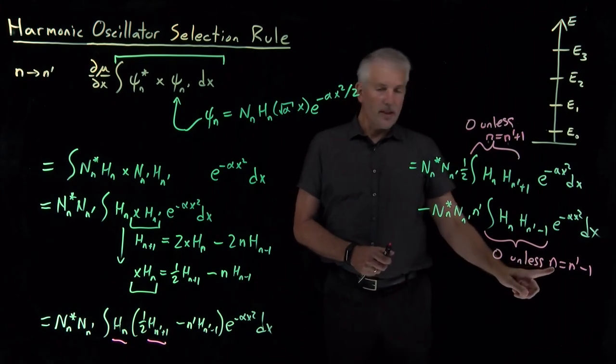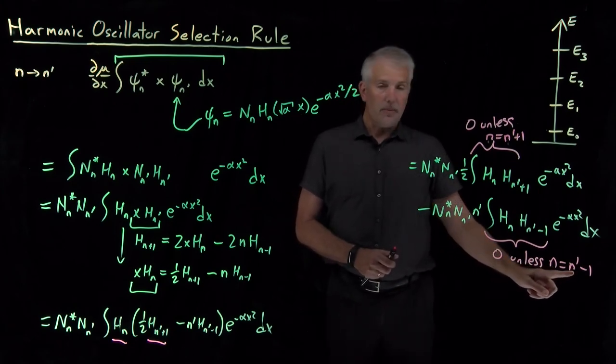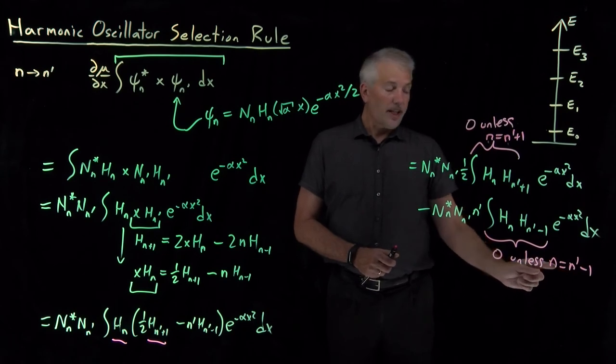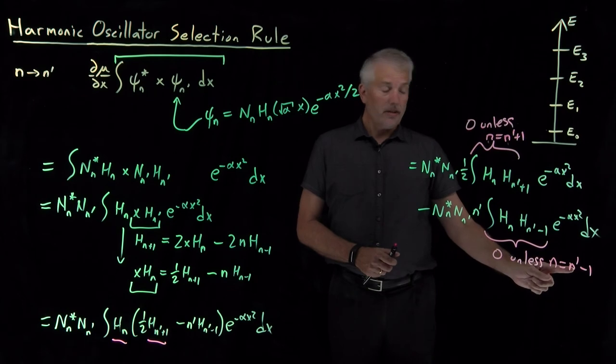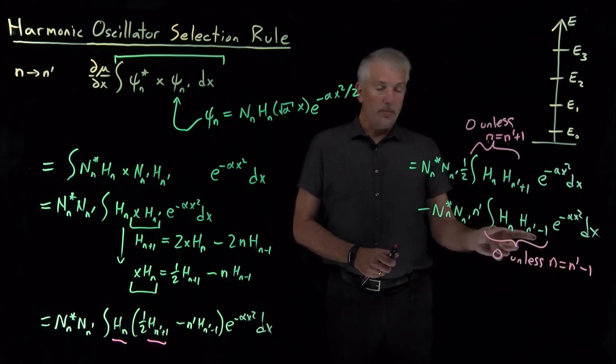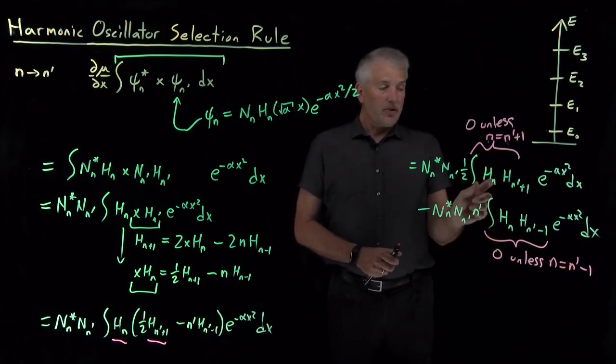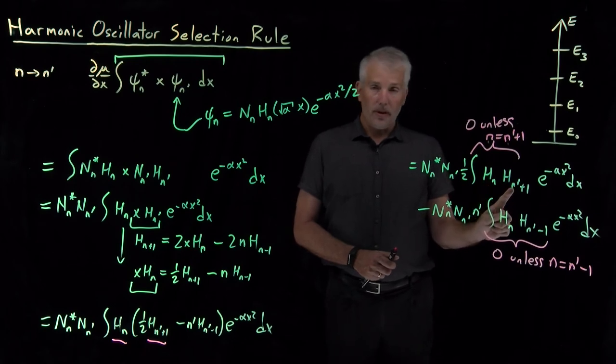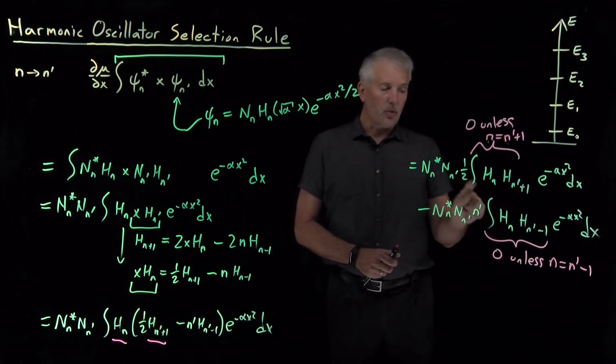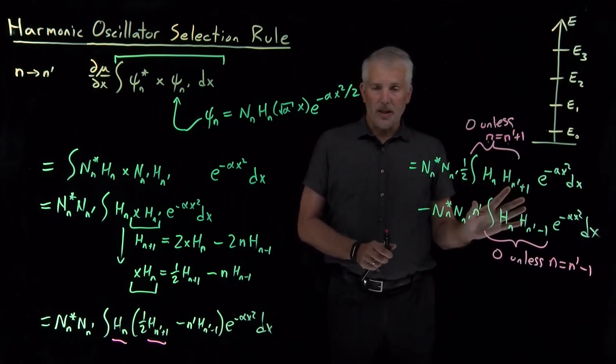Again, maybe if n is equal to 5, if n prime is equal to 6, then these two sides of the equation are equal to each other. So I can make a transition between the 5th and the 6th energy level because this integral will be non-zero. I can make a transition between the 5th and the 4th energy level because this integral will be non-zero. But any other transition I make will be 0.